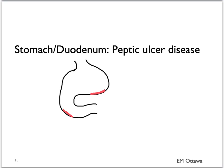The most important cause of bleeding from the stomach and duodenum is peptic ulcer disease. Risk factors include smoking, use of alcohol, and non-steroidal anti-inflammatory drugs. The patient can also present with a history of epigastric pain after eating. Patients with peptic ulcer disease can have brisk bleeding and can present with both melena and bright red blood per rectum.